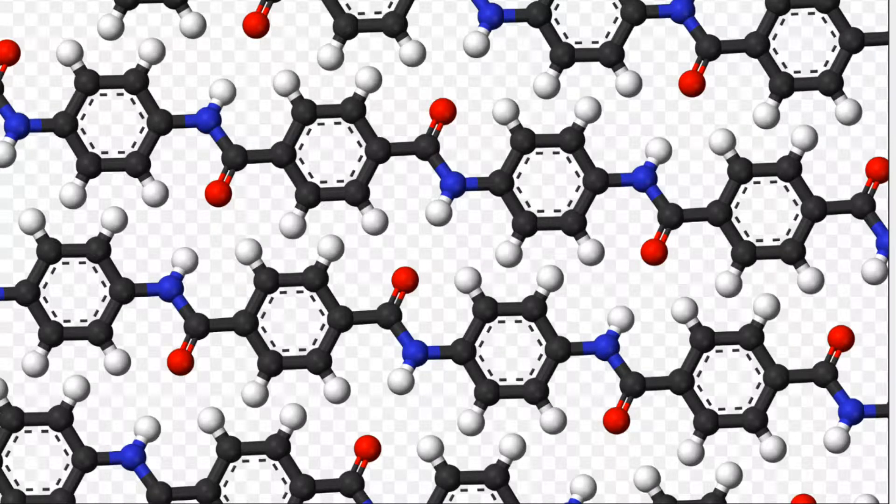This formation of atoms is called a syndiotactic structure. Syndiotactic structure means that the side amide groups alternate in orientation. In the picture, you can see the red oxygen atoms alternate between being oriented up and oriented down.